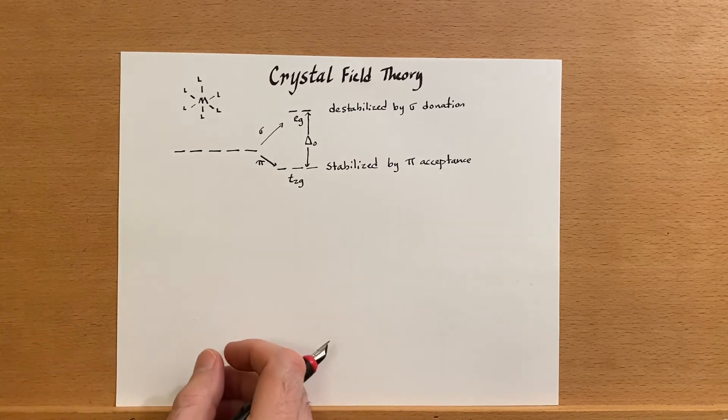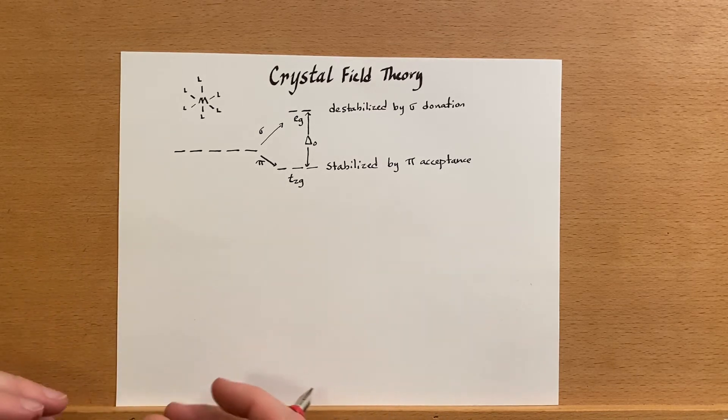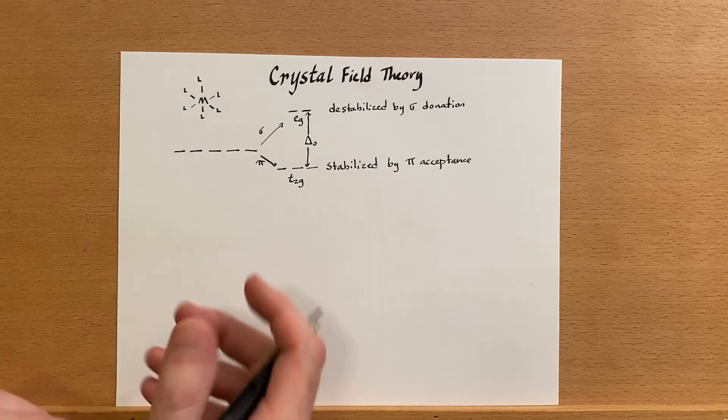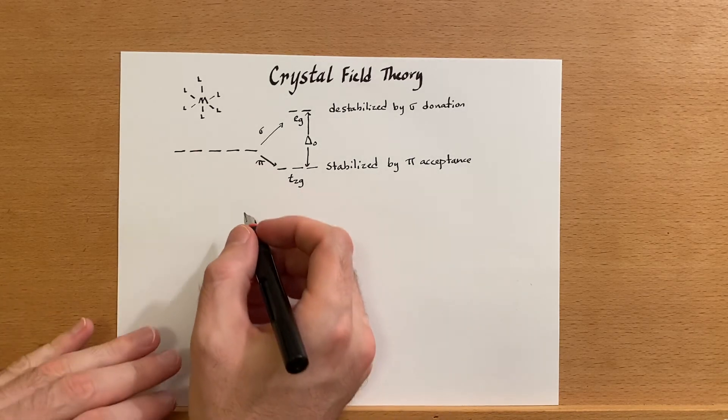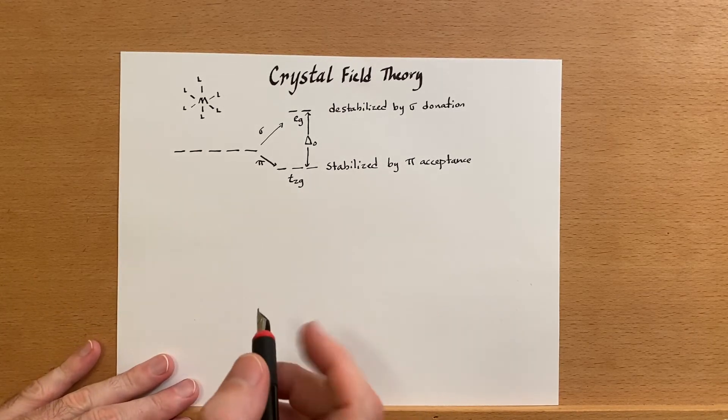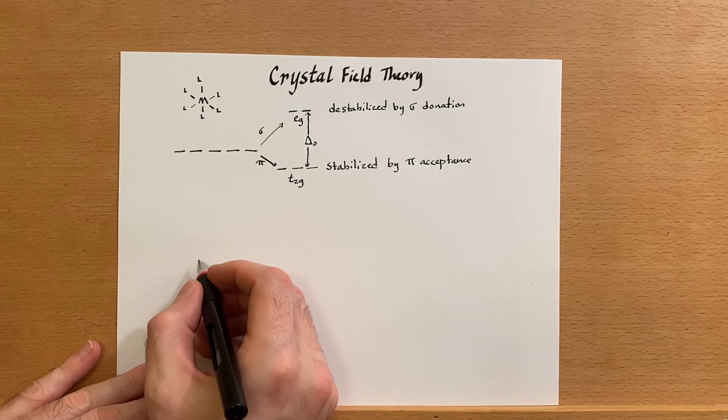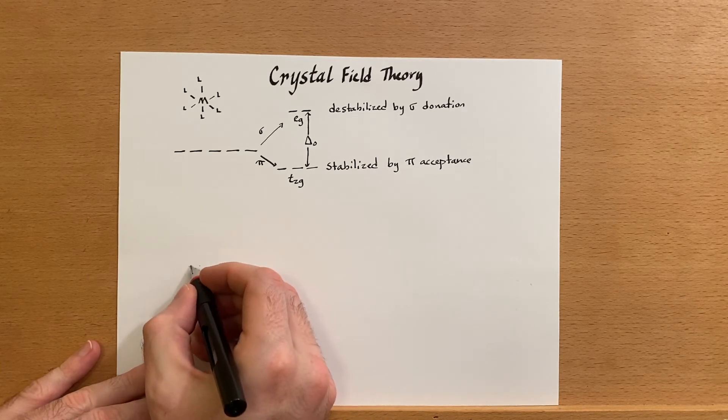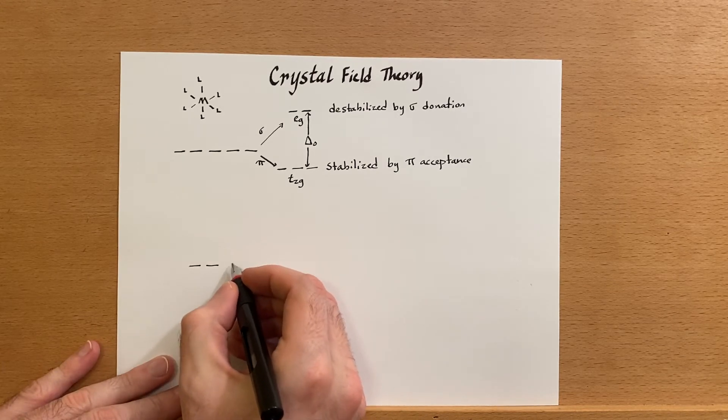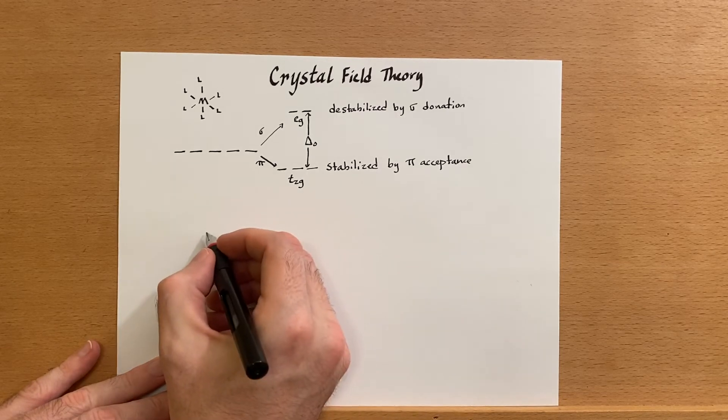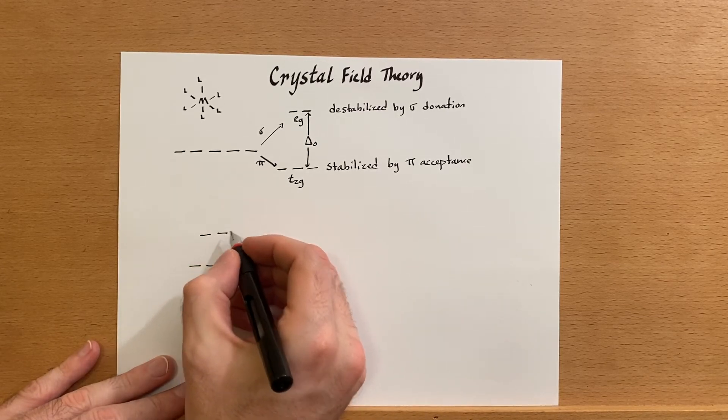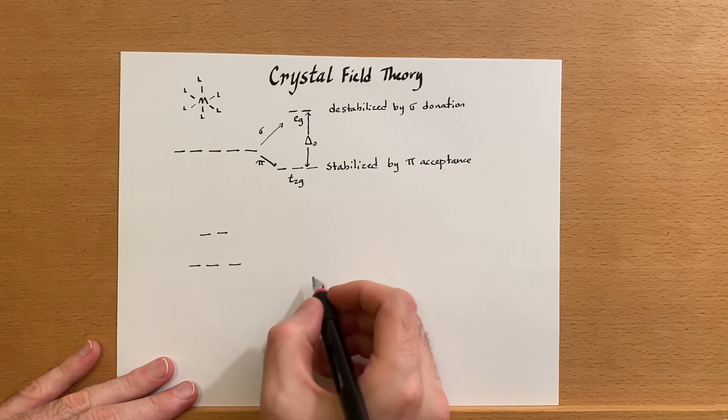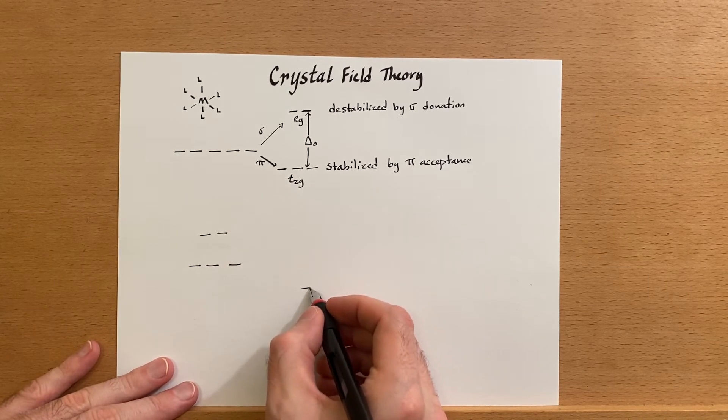Now why is this important? Well, it's important to understand the bonding characteristics inside of an inorganic complex, but it also has implications when we talk about the number of electrons that a complex has.